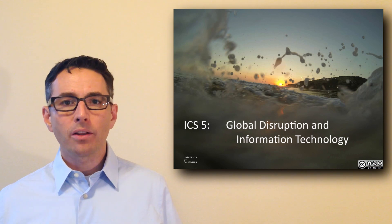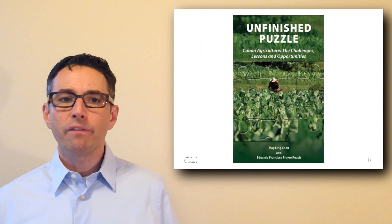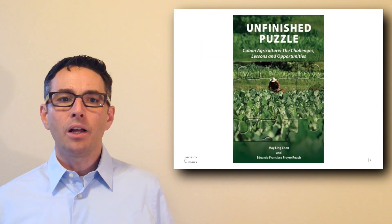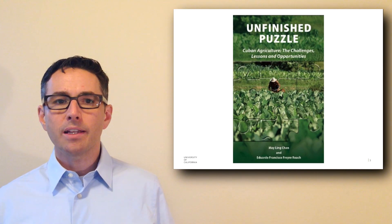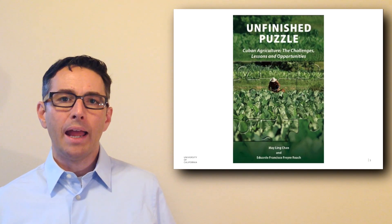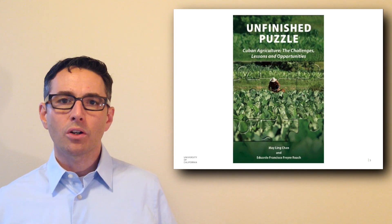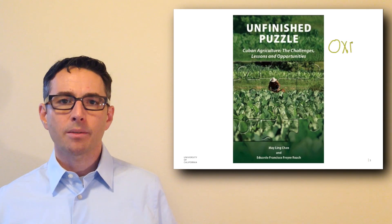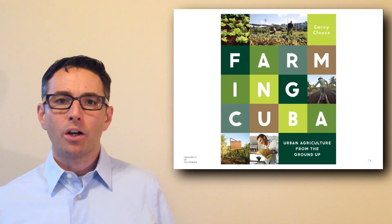Today's lecture is drawn primarily from two sources. The first is a book called 'Unfinished Puzzle: The Challenges, Lessons, and Opportunities of Cuban Agriculture.' This is a book that was commissioned by Oxfam to look at Cuba's historical food policy and to look at the numbers and some of the statistics behind it. The second book is called 'Farming Cuba: Urban Agriculture from the Ground Up.'